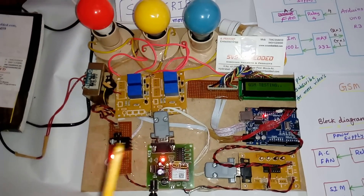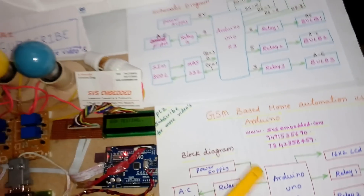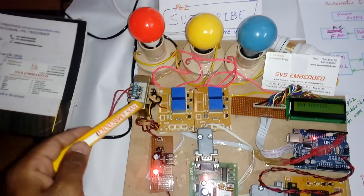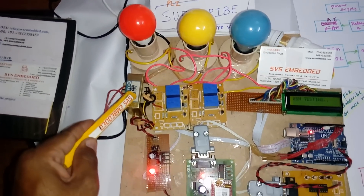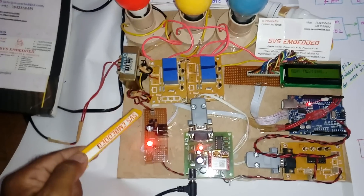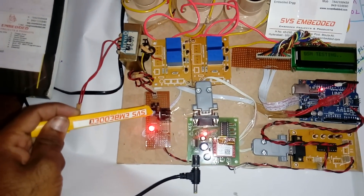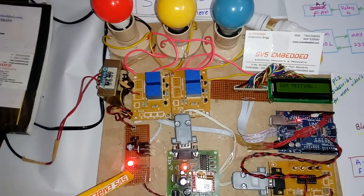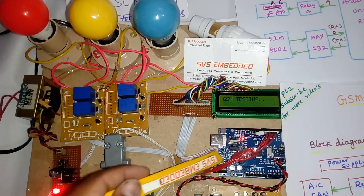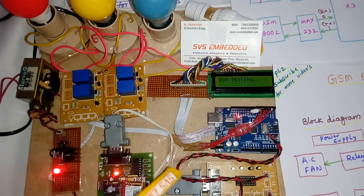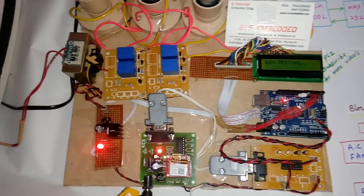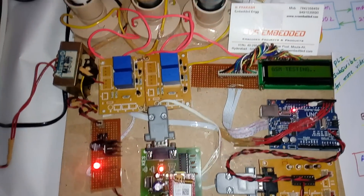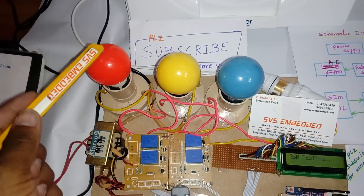This is my hardware unit. I am using a 230V input step-down transformer with a 9V output AC, given to a bridge rectifier, filter capacitor, and a 7805 regulator with one LED, producing 5 volts. This is supplied to the Arduino Uno R3 board. I am also using a MAX232, a SIM800L, and a Tata Docomo SIM card, along with bulb one, bulb two, bulb three, and one AC fan.